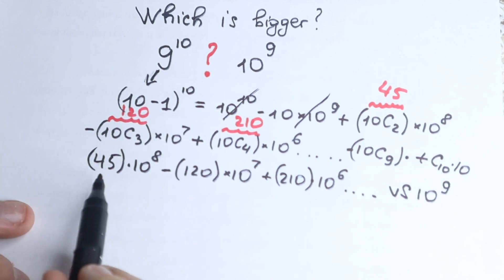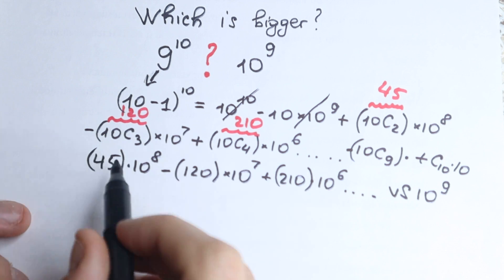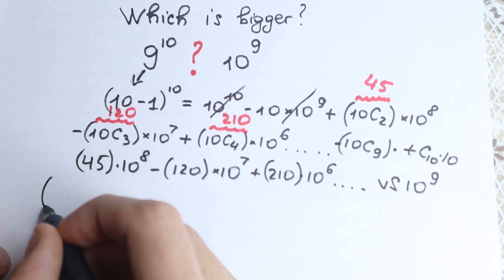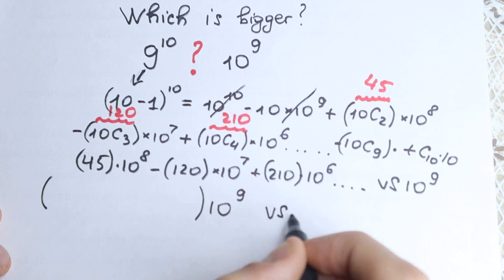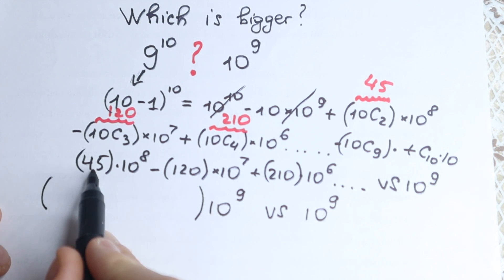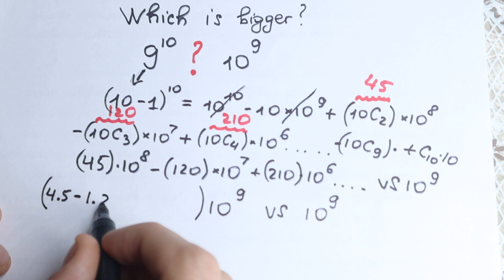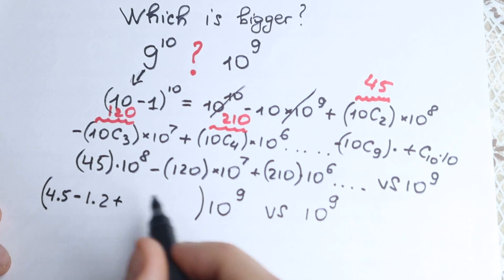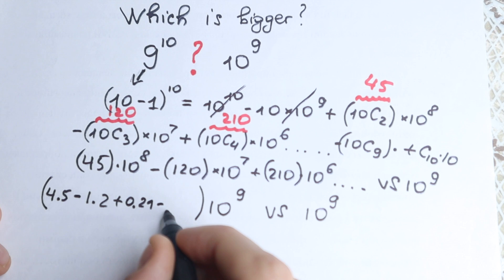Now let's factor 10 to the 9th power from this expression. We write the parentheses and factor out 10 to the 9th, then compare it versus 10 to the 9th power. From the 45 times 10 to the 8th term we get 4.5; then minus 1.2 (from the 120 term, moving two decimal places); then plus 0.21 (from the 210 term, three decimal places); and so on with more terms.